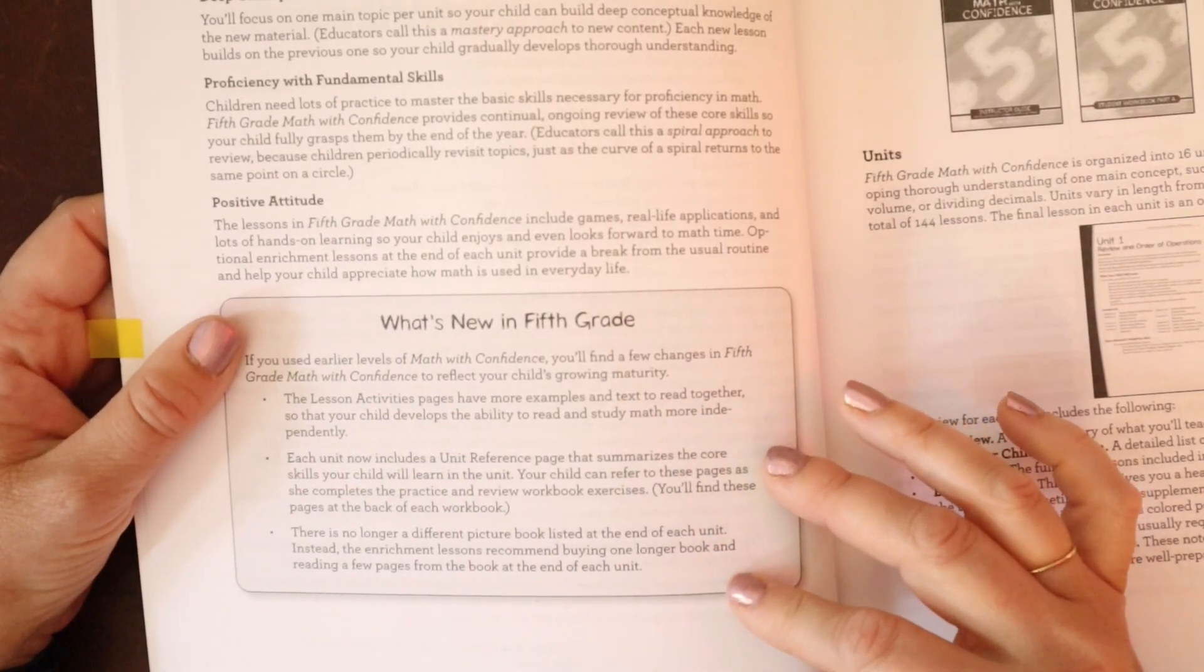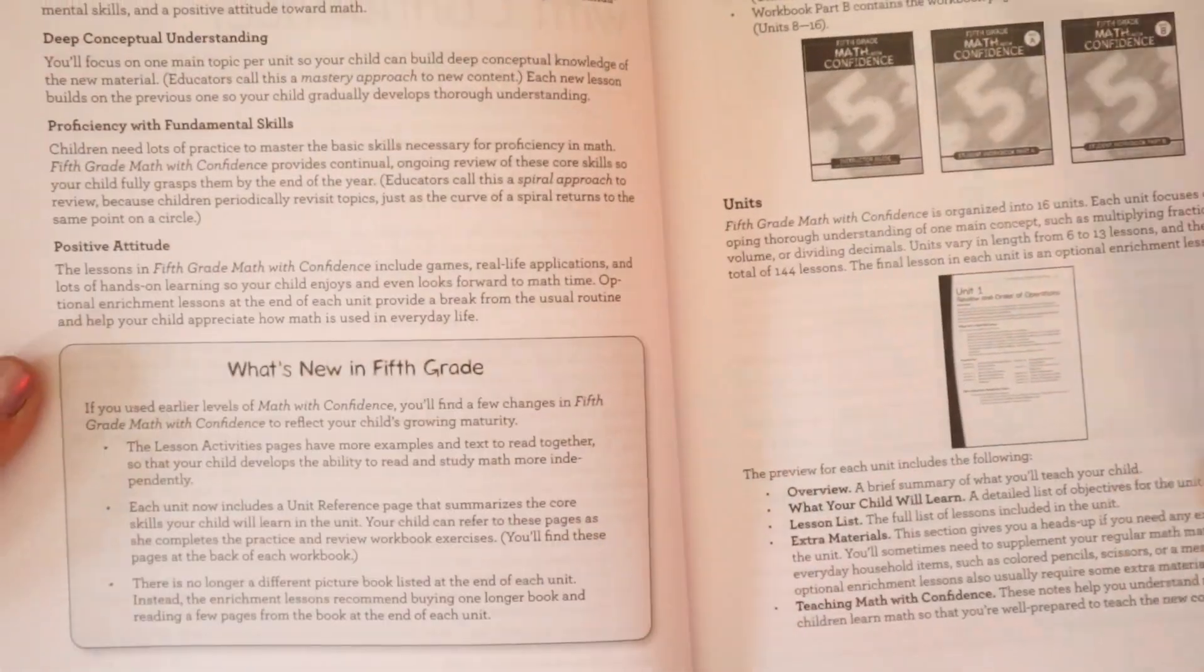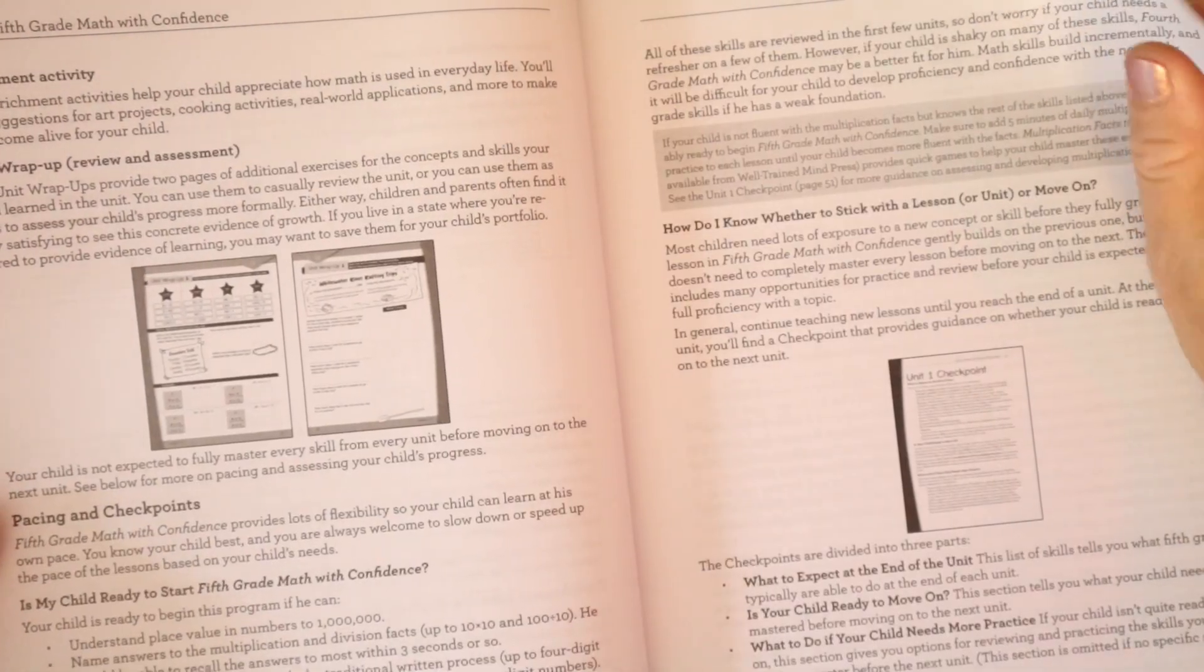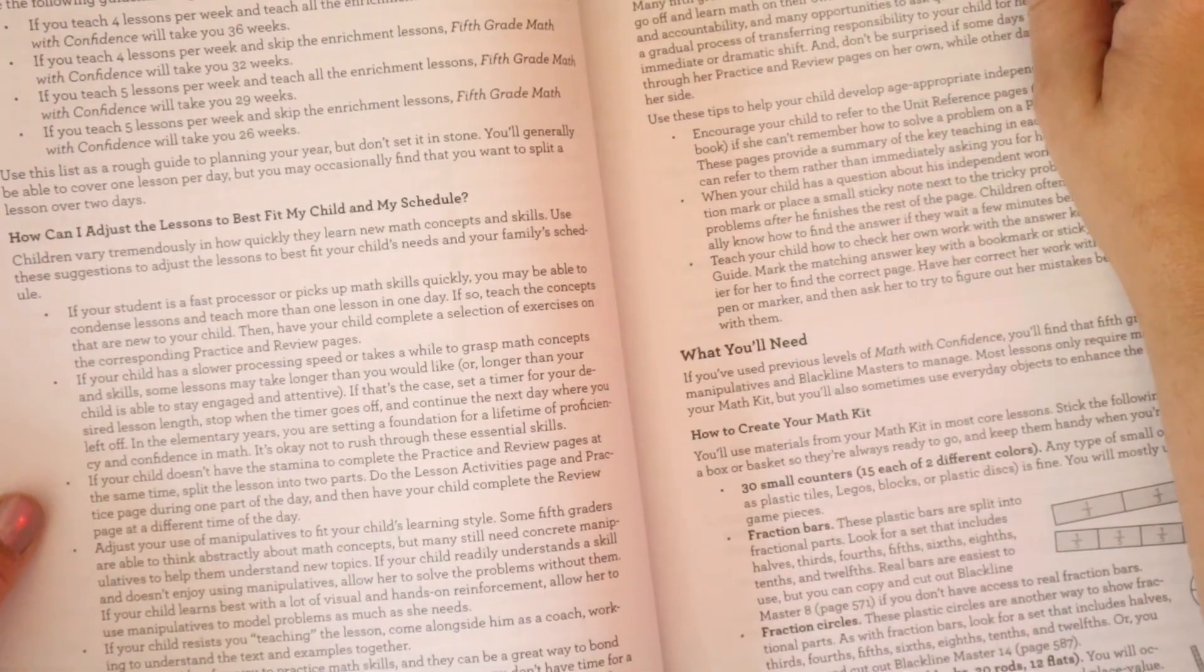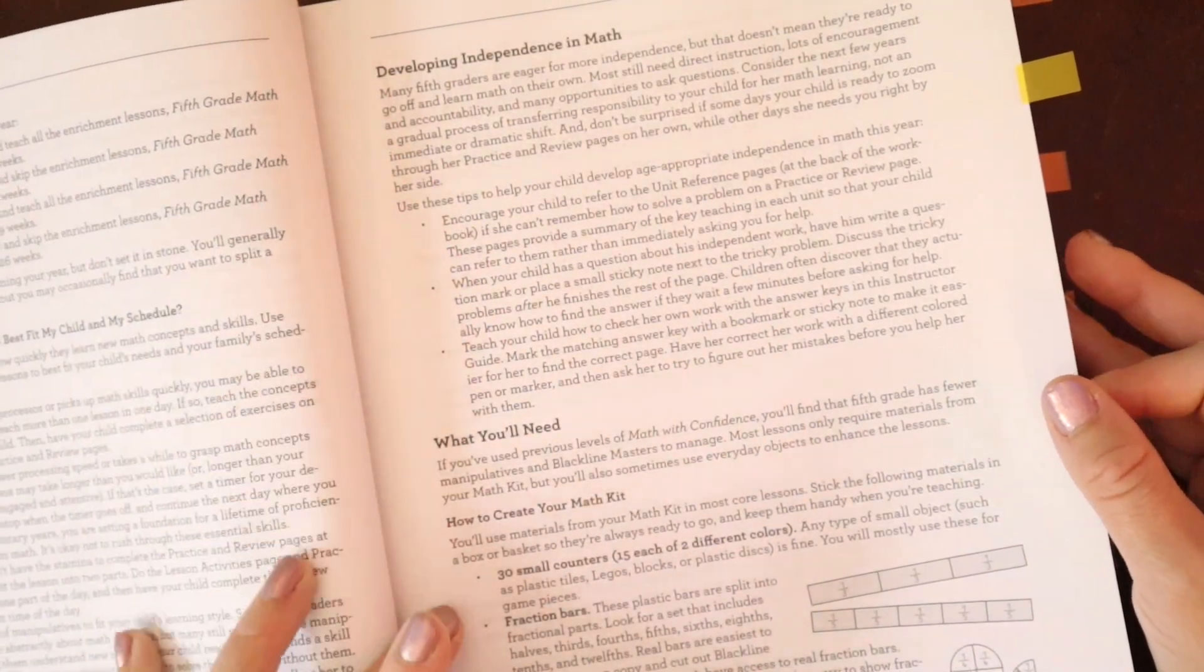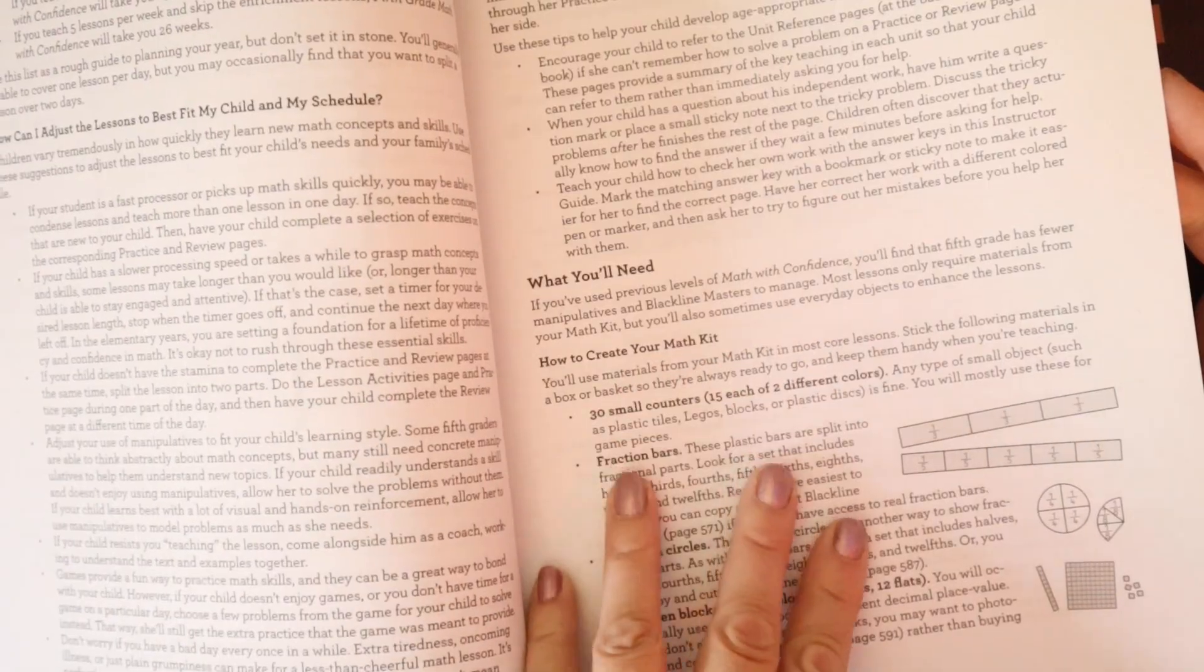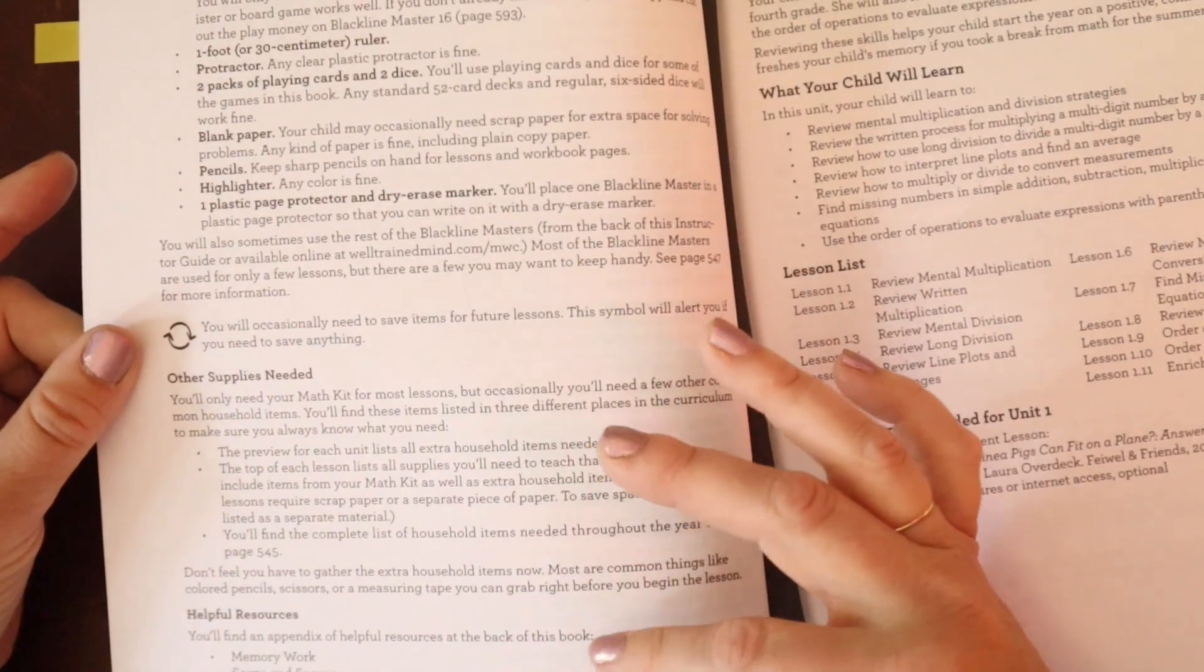And then there's no longer a different picture book listed at the end of each unit. Lessons recommend buying one longer book and reading a few pages from the book until the end of the unit. I don't have that book on me yet. I do have it on hold from the library, and I will flip through that over on Instagram when I get it. So we have our two books, and then we have our breakdown. The setup for this program is the same as previous Math with Confidence levels. This is walking through how to read the program, how to use the program. If you are new to Math with Confidence, I do recommend reading through all of this so that you understand how the program is developed. They also talk about how to adjust the lessons to fit your child and their schedule, developing independence in math, and then the materials for your material kit. Just a quick look over here. If you already did Math with Confidence 4, I don't think you're going to need any new materials for this. You will need fraction manipulatives to complete and work with the fraction units. And if you don't have access to that, they do have black line masters that you can just print on cardstock or something and use that way. There's also still memory work and whatnot.